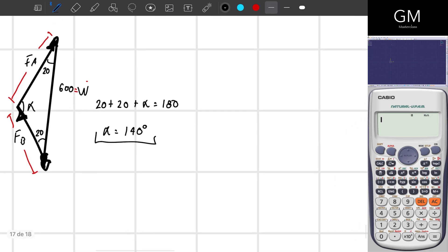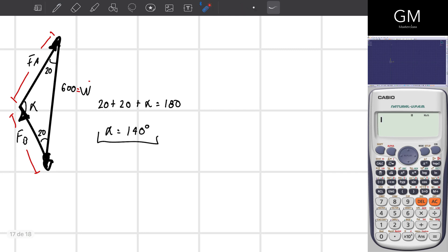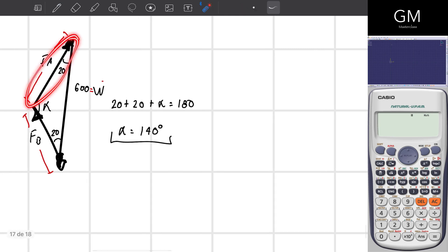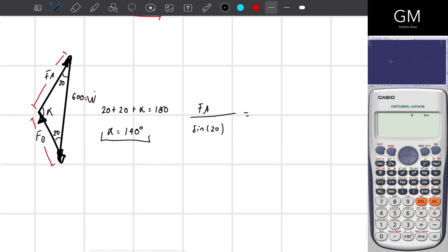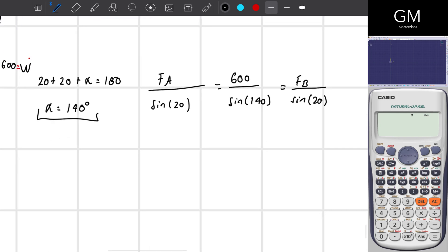So I'm going to create a sine law. So this is pretty easy. I just have to take into account the magnitude and the opposite side. So F_A divided by the sine of 20 is equal to 600 divided by the sine of alpha.